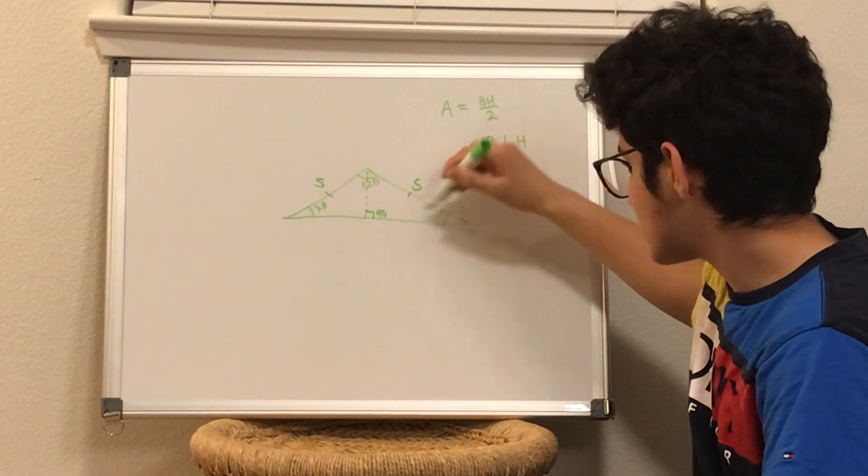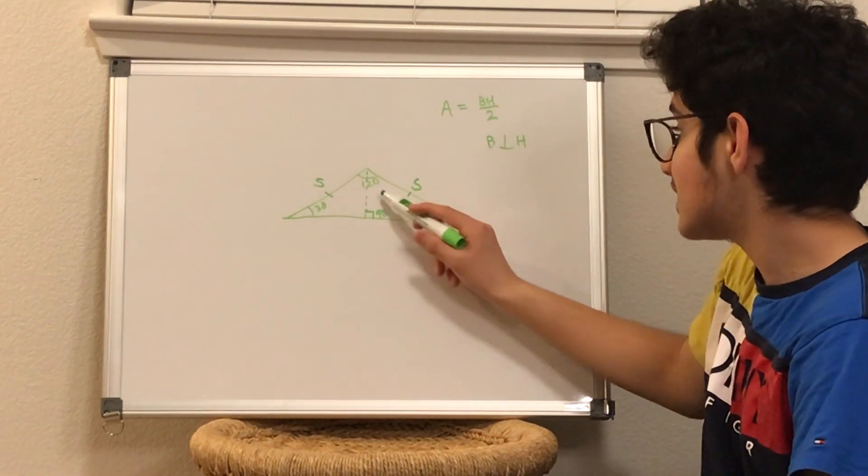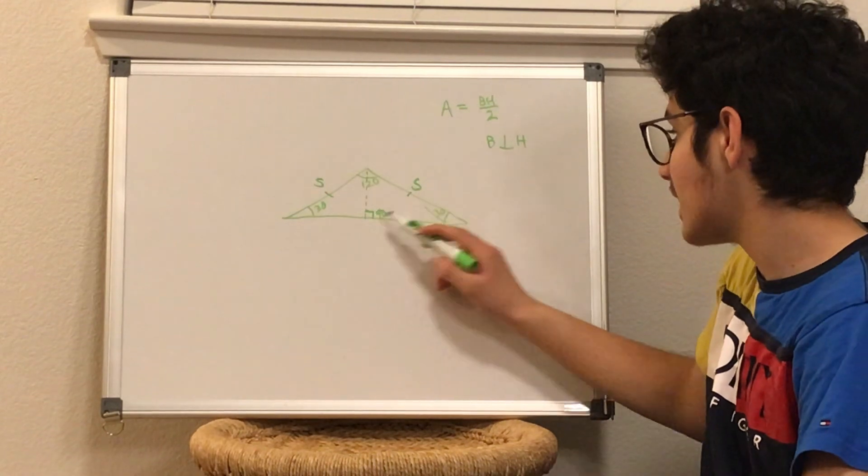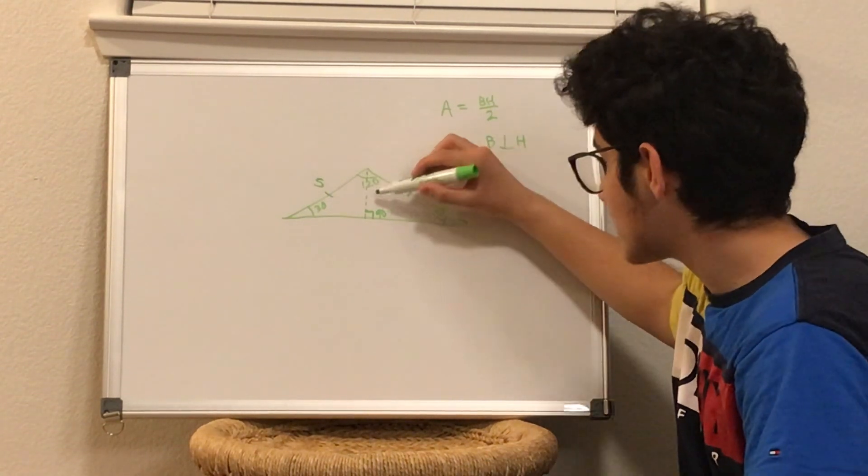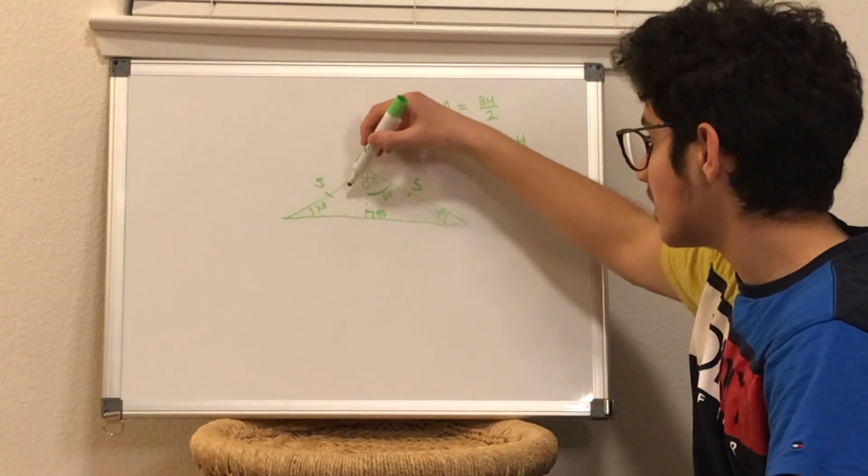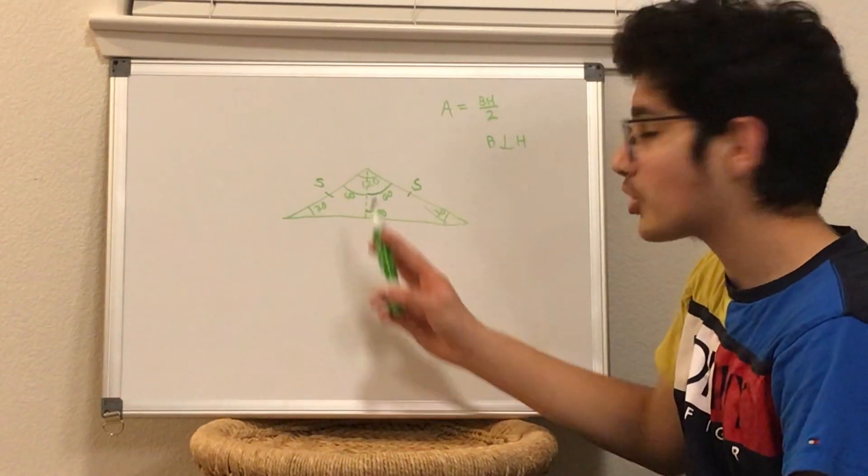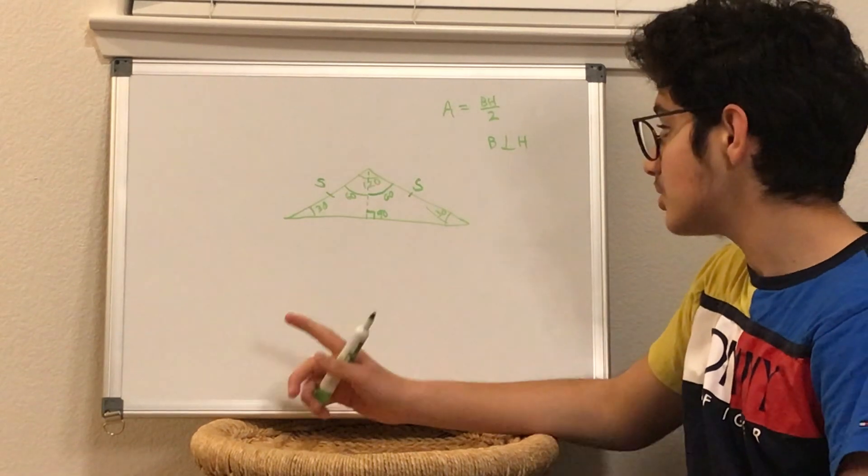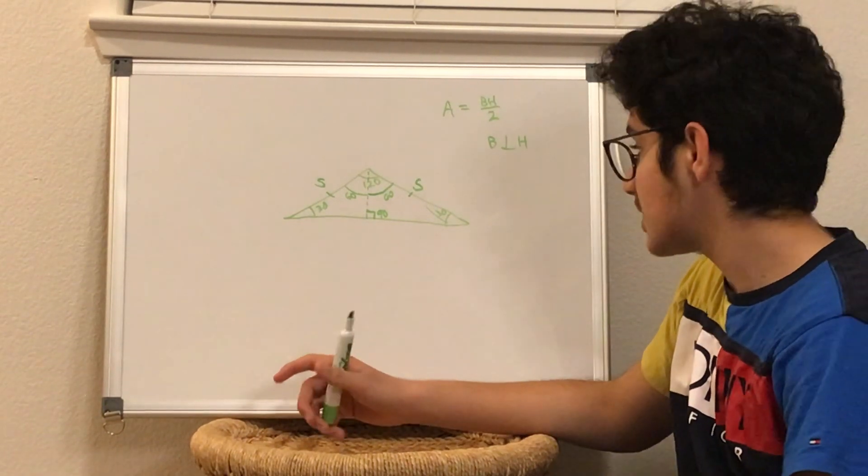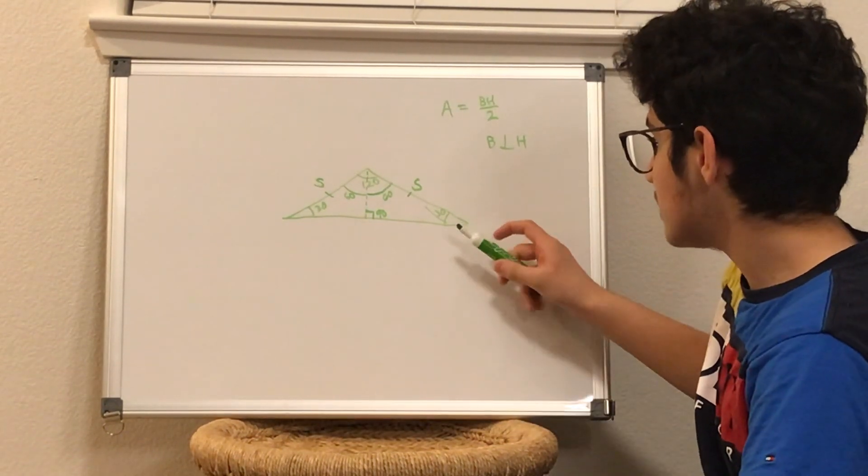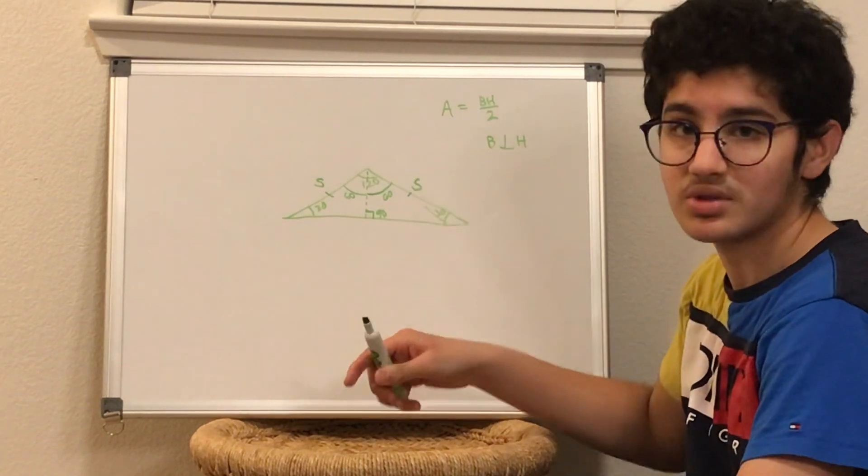And then similarly, it's the exact same on this side. This is also 60 degrees. So now we've broken this into two triangles, which will make our job a bit easier. Now we can use some of our ratios to figure out the rest of the stuff.